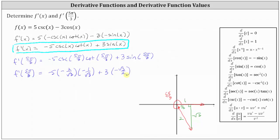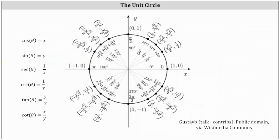If we did want to use a unit circle instead, remember that cosecant theta equals one divided by y, cotangent theta equals x divided by y, and sine theta equals y. The terminal side of five pi divided by three radians intersects the unit circle where x equals one half and y equals negative square root three divided by two. You may want to pause the video just to check that you get the same trig function values.